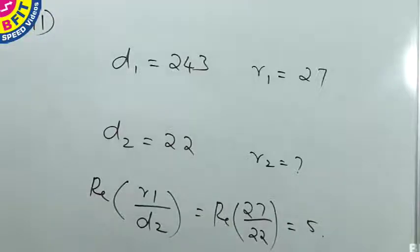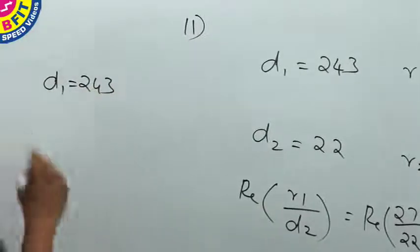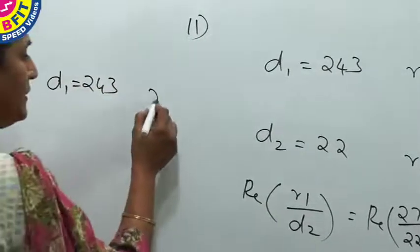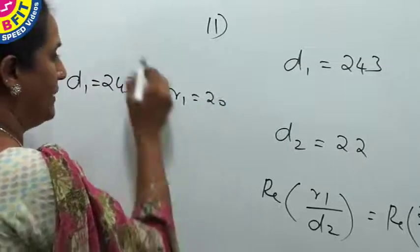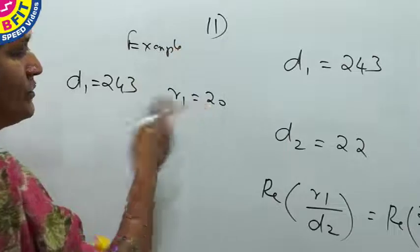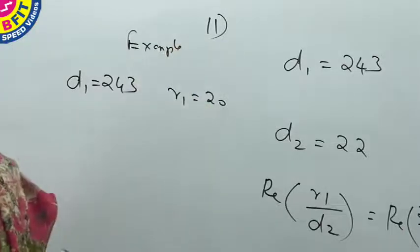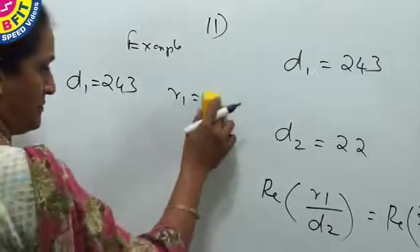For example, if a number is divided by 243 and the remainder is 20, since 20 doesn't divide 243, the answer cannot be determined.